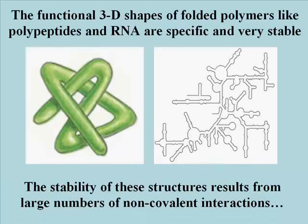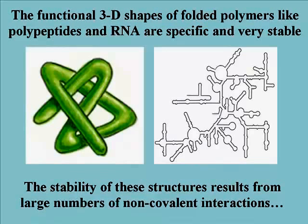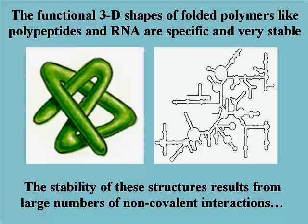We'll return to a consideration of the structure and functions of nucleic acids and proteins as well several times in this course. Here I want to highlight the fact that non-covalent interactions, like the millions of H bonds between strands in DNA, can form within and between different molecules, creating very stable shapes. We saw this in the three-dimensional structure of polypeptides, represented by the cartoon on the left, and in the folding of a single strand of RNA, represented by the drawing on the right.